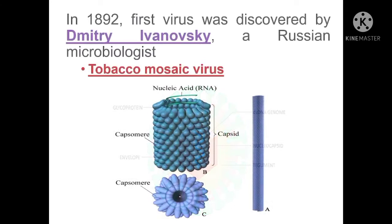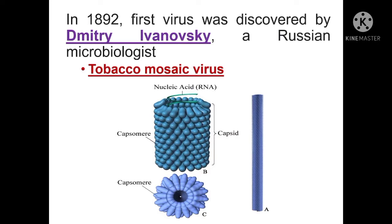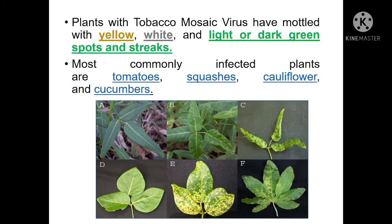In 1892, the first virus was discovered by Dmitry Ivanovsky, a Russian microbiologist. This virus is called the Tobacco Mosaic Virus, which causes crop failures in every part of the world. Plants with Tobacco Mosaic Virus have mottled yellow, white, and light or dark green spots and streaks. The most commonly infected plants are tomatoes, squashes, cauliflower, and cucumbers.